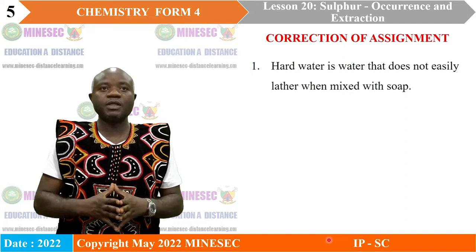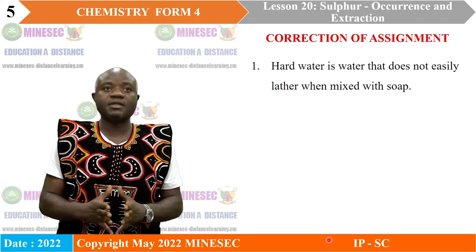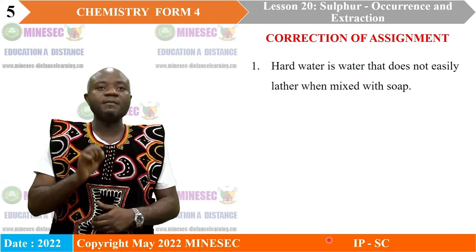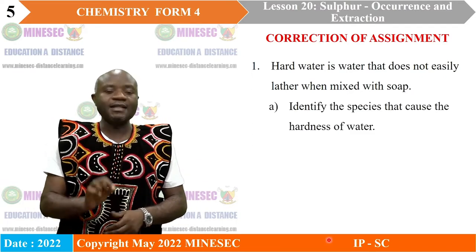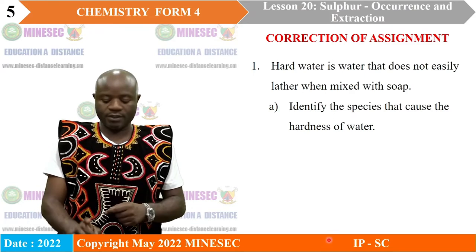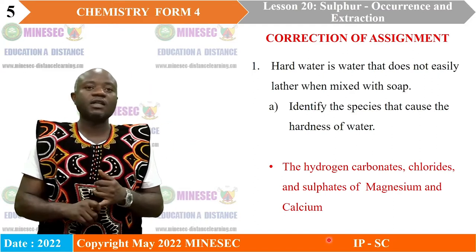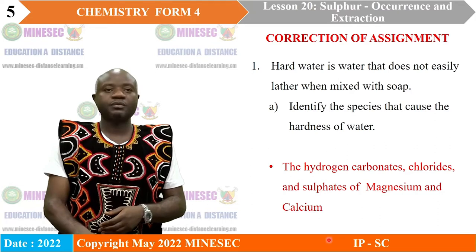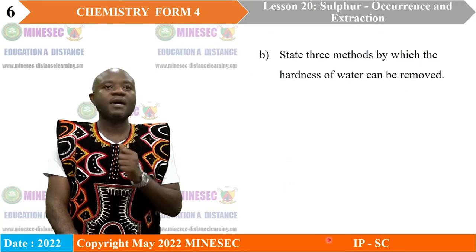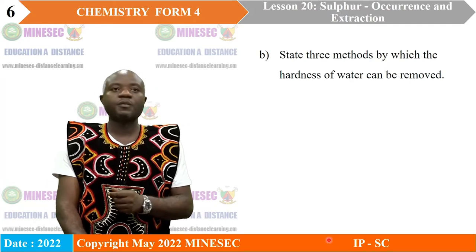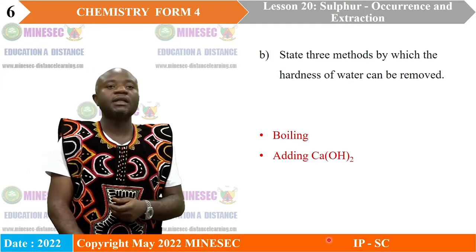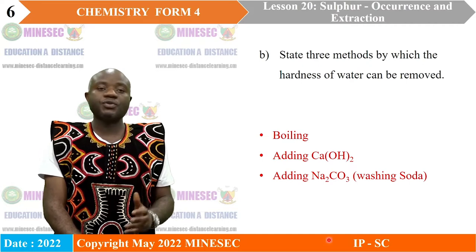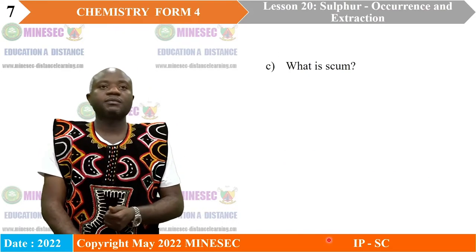Before we proceed with our lesson for today, let us correct the assignment we had in the previous lesson. Question number one: Hard water is water that does not easily lather when mixed with soap. A. Identify the species that cause the hardness of water. The species that cause the hardness of water include the hydrogen carbonate, the chlorides and the sulfate of magnesium and calcium. B. State three methods by which the hardness of water can be removed. Hardness of water can be removed by boiling, by the addition of calcium hydroxide, and by the addition of washing soda, that is sodium hydrogen carbonate.